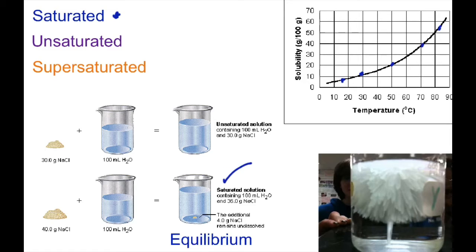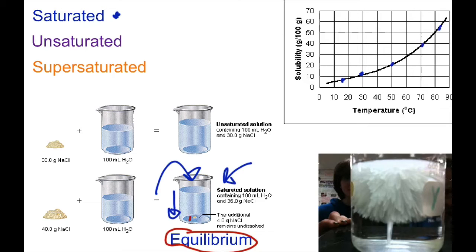If we have a saturated solution and we add more solute to it, that solute will simply fall to the bottom — it will not dissolve. A saturated solution has a unique feature: it's in equilibrium, meaning there are equal rates of dissolving — solid going into solution — and at the same time, at an equal rate, solution turning back into solid. It's invisible to the eye but it happens dynamically, back and forth.